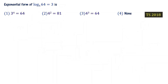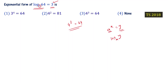Problem: What is the exponential form of log₄64 = 3? The base is 4 and the power is 3, so we write 4³ = 64. Using the rule: if log_a(y) = x, then a^x = y. Here, 4^3 = 64 is the answer. Understood?